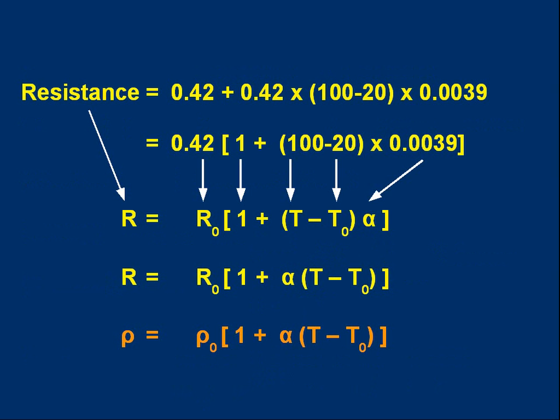Can we get a nice easy to use equation out of all of this? Well, yes, we can. Let's just summarize what we just did. We found the resistance was the original resistance, 0.42, plus the change. And the change was the original resistance, times the temperature change, times alpha. Let's look at that carefully. You'll see you can factorize 0.42 out. It's 0.42, open bracket, 1, plus temperature change, times alpha.